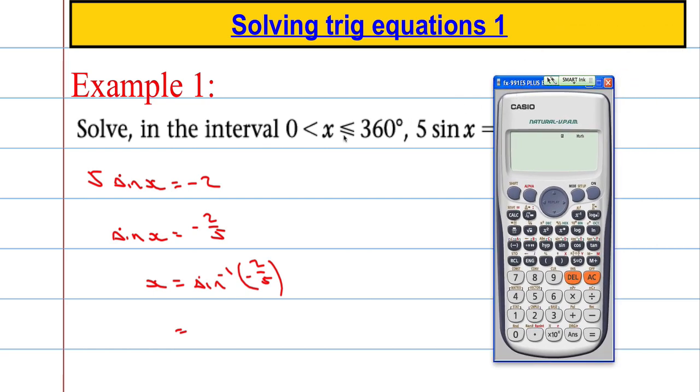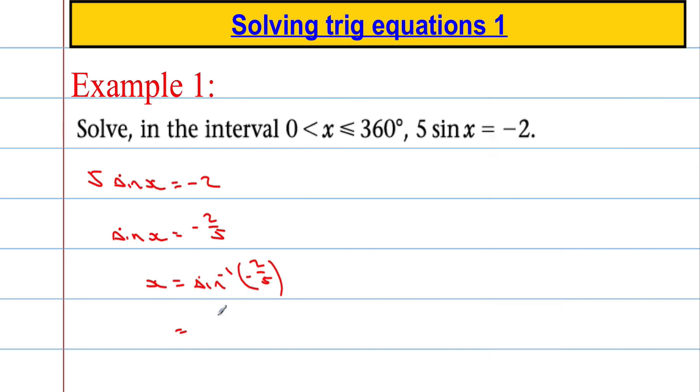Very important here we realize that our question is in degrees so I'm going to make sure that my calculator is set to degrees. Shift and set up and we want to put it in degree mode, option 3. Now we're ready to go so we're going to take the inverse sine of negative 2 over 5. When I put that in I get negative 23.6 to 3 significant figures.